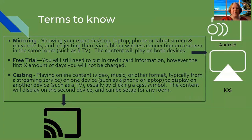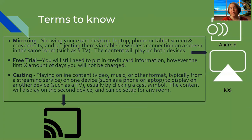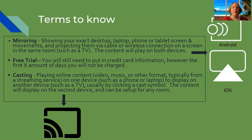Some terms to know before going further: mirroring and casting are two similar but different terms. Mirroring is where you're using one device — like a laptop, tablet, or phone — and projecting those movements and that screen onto your TV. So you're seeing the same thing on both the laptop and the TV at the same time, and both devices are tied up.